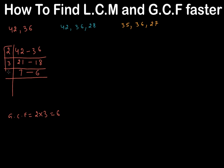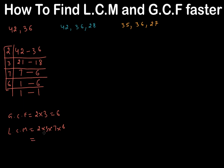For LCM we keep going. 7 doesn't go into 6, so we write 6 as it is. Then 6 goes into 6 once, and we leave 1 as it is. Now all ones are at the bottom. LCM is the product of all the numbers on the side and top: 2 times 3 times 7 times 6, which is 2 times 3 equals 6, times 7 equals 42, times 6 equals 252.